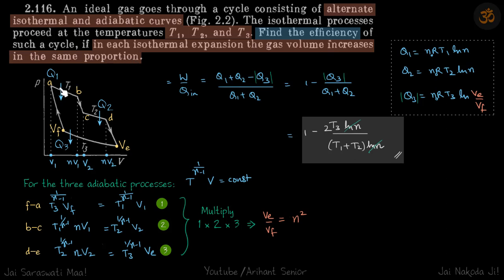Let's start with the first isothermal expansion. If the volume is V1, then at point B, at this state, the volume becomes n times V1. In the second isothermal expansion also, the volume is increasing by the same amount. So if volume here is V2, then volume here becomes nV2. This is the information which is given to us and we need to find the efficiency.